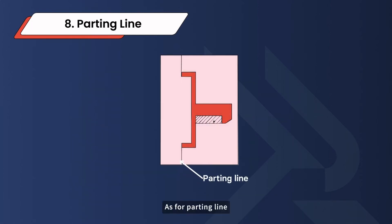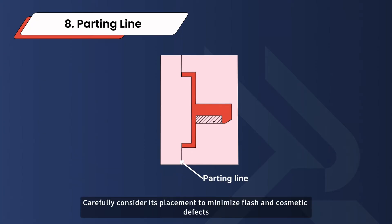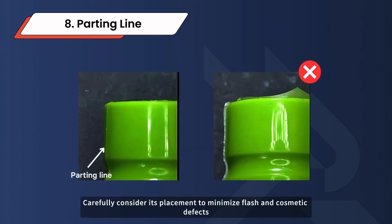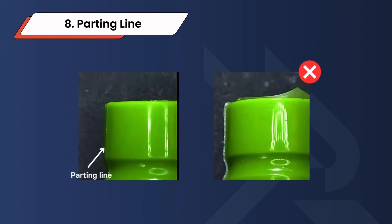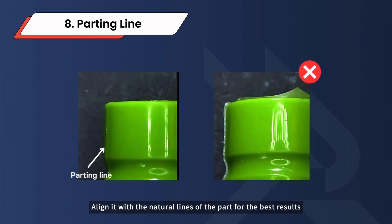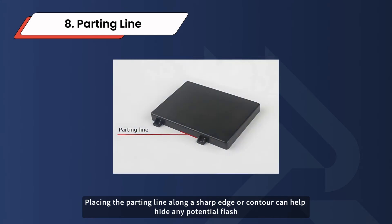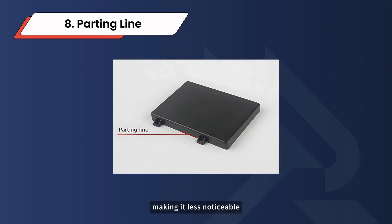As for parting line, it is where the two halves of the mold meet. Carefully consider its placement to minimize flash and cosmetic defects. Align it with the natural lines of the part for the best results. Placing the parting line along a sharp edge or contour can help hide any potential flash, making it less noticeable.